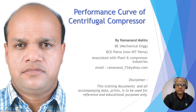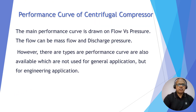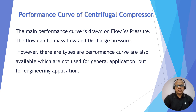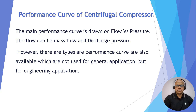So let's begin the discussion on the performance curve of centrifugal compressor. A main performance curve is drawn on flow versus pressure — flow can be mass flow and discharge pressure, normally in bar absolute or kg or any other units. However, various types of performance curves are also available which are not in use for general application but in engineering applications. So let's discuss what are the various types of performance curves used for centrifugal compression.